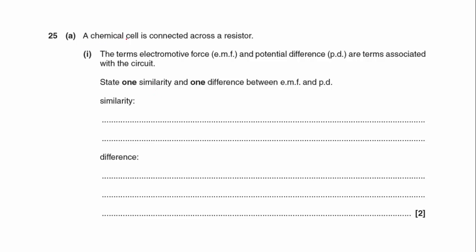Question 25a: A chemical cell is connected across a resistor. The terms electromotive force (EMF) and potential difference (PD) are terms associated with the circuit. State one similarity and one difference between EMF and PD.